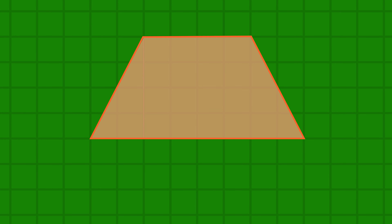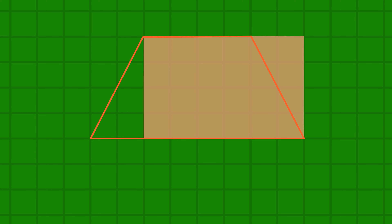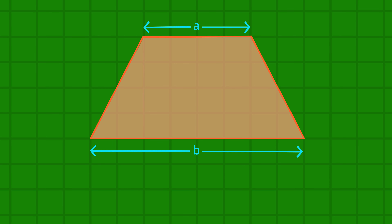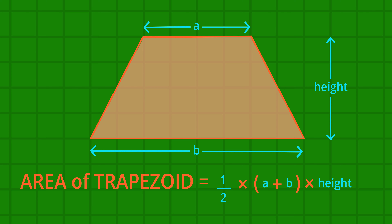Let's consider the rule for the area of this trapezoid. If we cut off this end triangular piece and place it at the other end, it makes a rectangle. That means the rule for the area of the trapezoid is similar to the rule for the area of a rectangle — it's like length times width. But the trapezoid has a short length called a and a long length called b, so we average these by adding the short and long lengths and dividing by two, then multiply by the perpendicular height. So the rule for the area of a trapezoid equals one half multiplied by the sum of the short and long lengths, then multiplied by the perpendicular height.